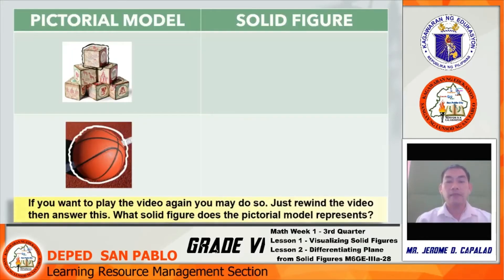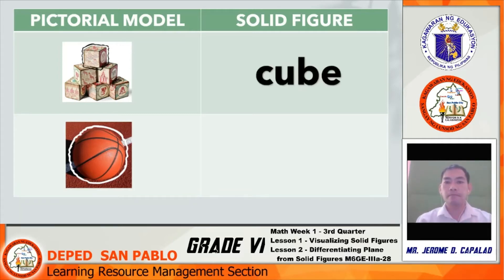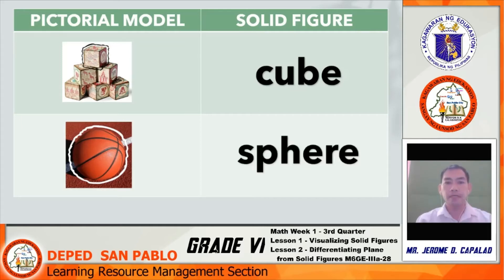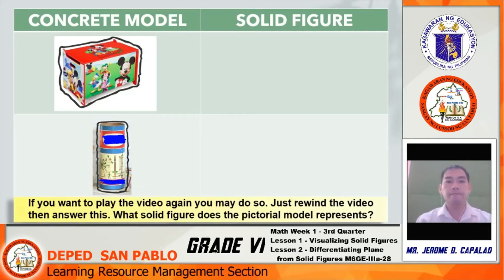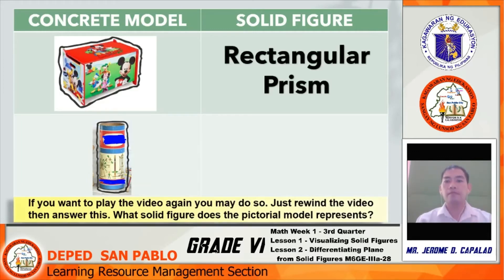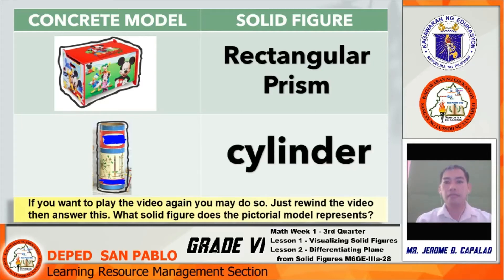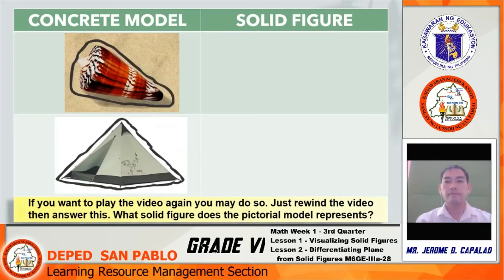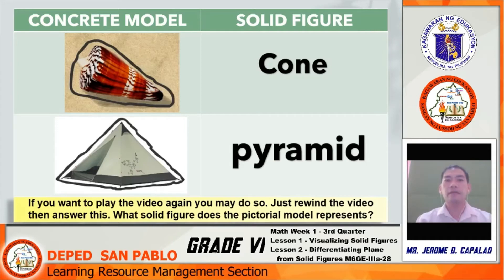If you want to play the video again, you may do so — just rewind. What solid figure does the pictorial model represent? The first one: that is a cube. The second one: that is a sphere. The next: rectangular prism. Next: cylinder. Then: that is a cone. And the last one: that is a pyramid.